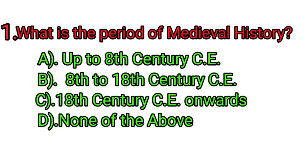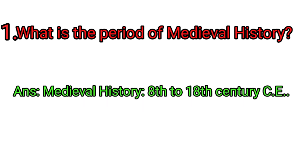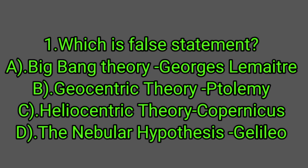What is the period of medieval history? A. Up to 18th century CE. B. 18th to 18th century CE. C. 18th century CE onwards. D. None of the above. The correct answer is 8th to 18th century CE.